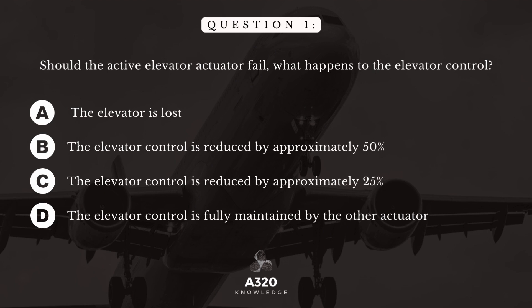Question 1. Should the active elevator actuator fail, what happens to the elevator control? A. The elevator is lost. B. The elevator control is reduced by approximately 50%. C. The elevator control is reduced by approximately 25%. D. The elevator control is fully maintained by the other actuator.